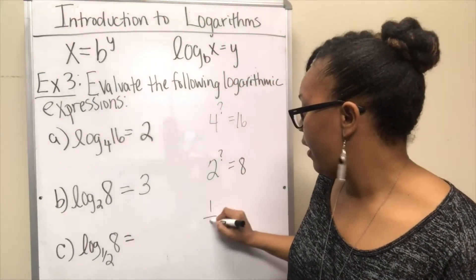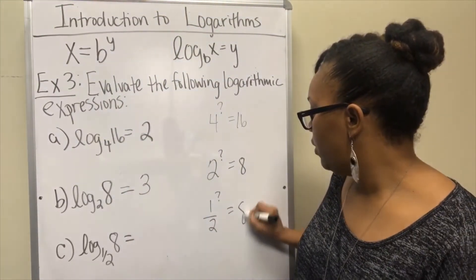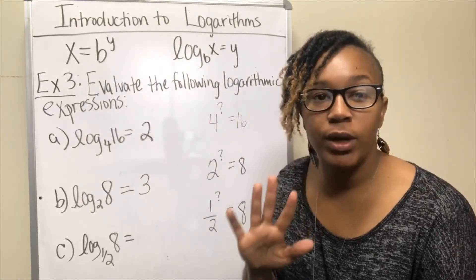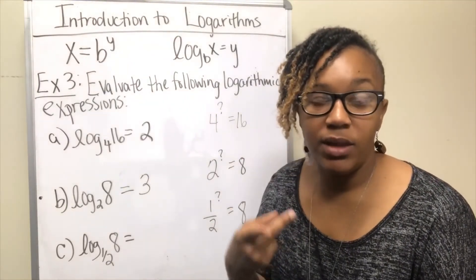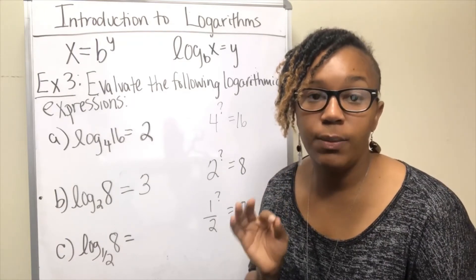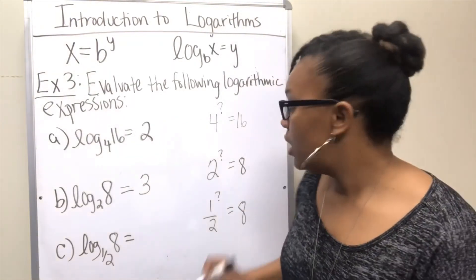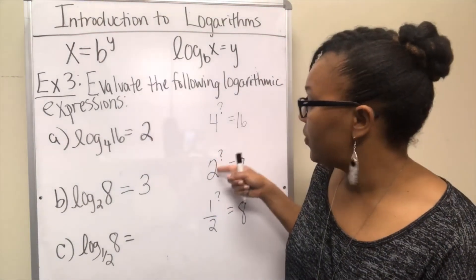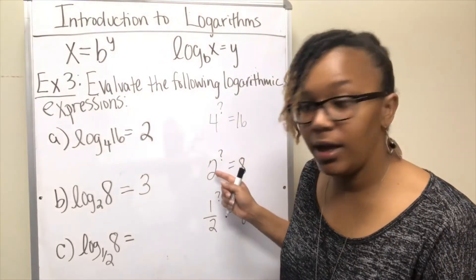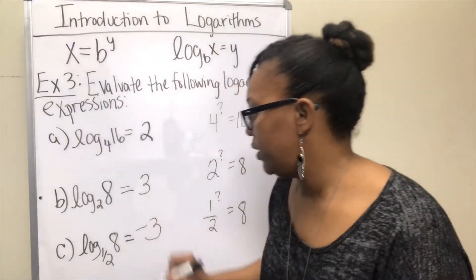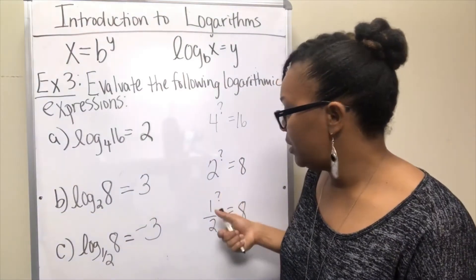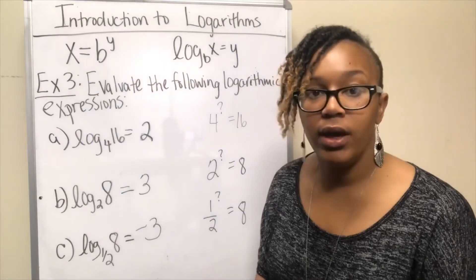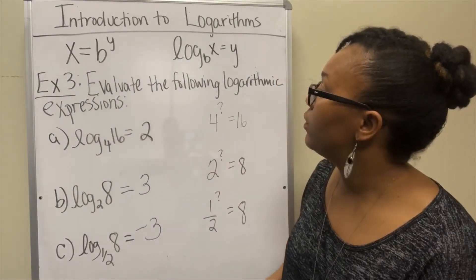For this one, 1 half to what power equals 8? This is a fraction, and to get 8 we need to flip that fraction — we need to make it a 2. The way you flip a fraction is by raising it to a negative exponent. So raising it to a negative exponent flips it to become 2, and 2 to the third equals 8. So log base 1 half of 8 is equal to negative 3. This is how you evaluate logarithmic expressions — you're looking for the exponent you need to raise the base to in order to get the given number.